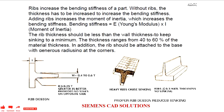The purpose of adding a rib to the part is to provide bending stiffness to the part. Without a rib, the part will get warped. So to avoid that, we need to have the feature called a rib. Adding ribs increases the moment of inertia, which increases the bending stiffness.